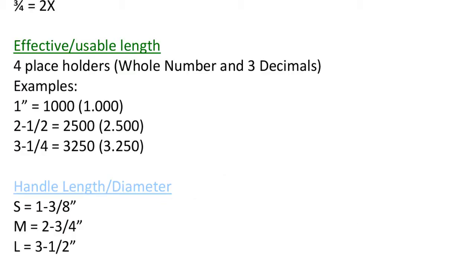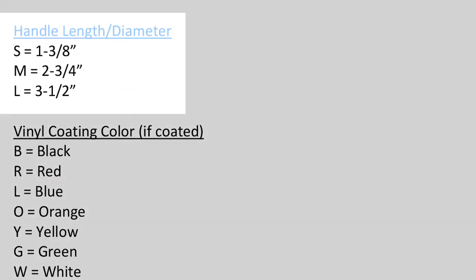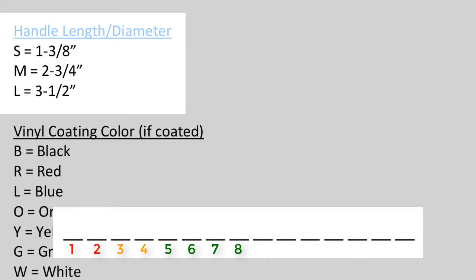Next, we move on to the blue section called handle length. There is one space allocated to this attribute in space holder number 9. Depending on the handle length, specify if the handle length is small, medium, or large using an S, M, or L. If the size does not match any of the options, use an X for special. An X tells the team to refer to the part's description or blueprint to identify what exactly is special or custom about this part.